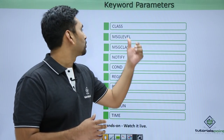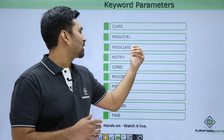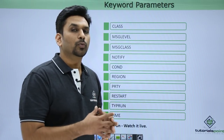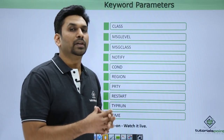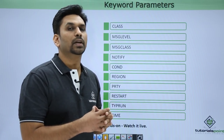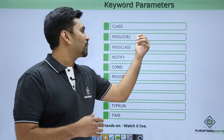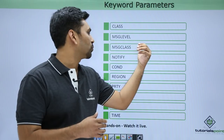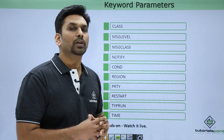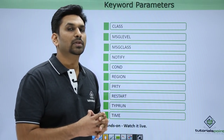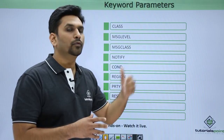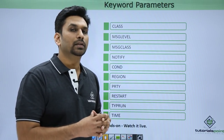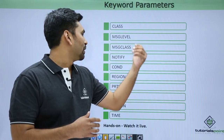Then we have MSGCLASS and MSGLEVEL. MSGCLASS specifies where the output should be printed — either in the spool or in a data set. MSGLEVEL specifies what type of messages should be printed as defined in the message class. You can configure it to print only the JOB statement or all output statements.